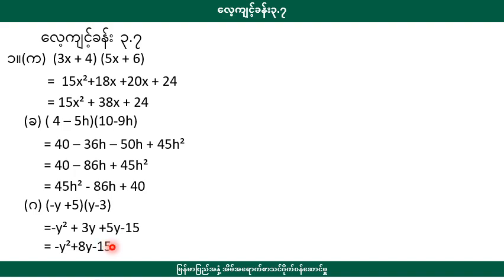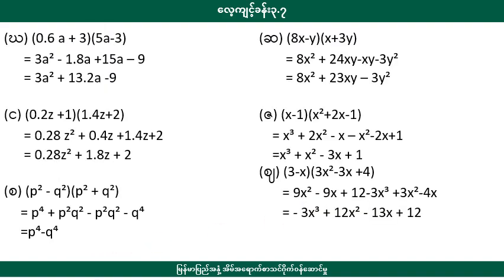This is equal to minus 50. 0.6a plus 3 is equal to 5a minus 3. 0.6a is equal to 5a minus 3, so 0.6a minus 3 is equal to 5a minus 3. So 0.2a plus 1 is equal to 1.4a plus 2.